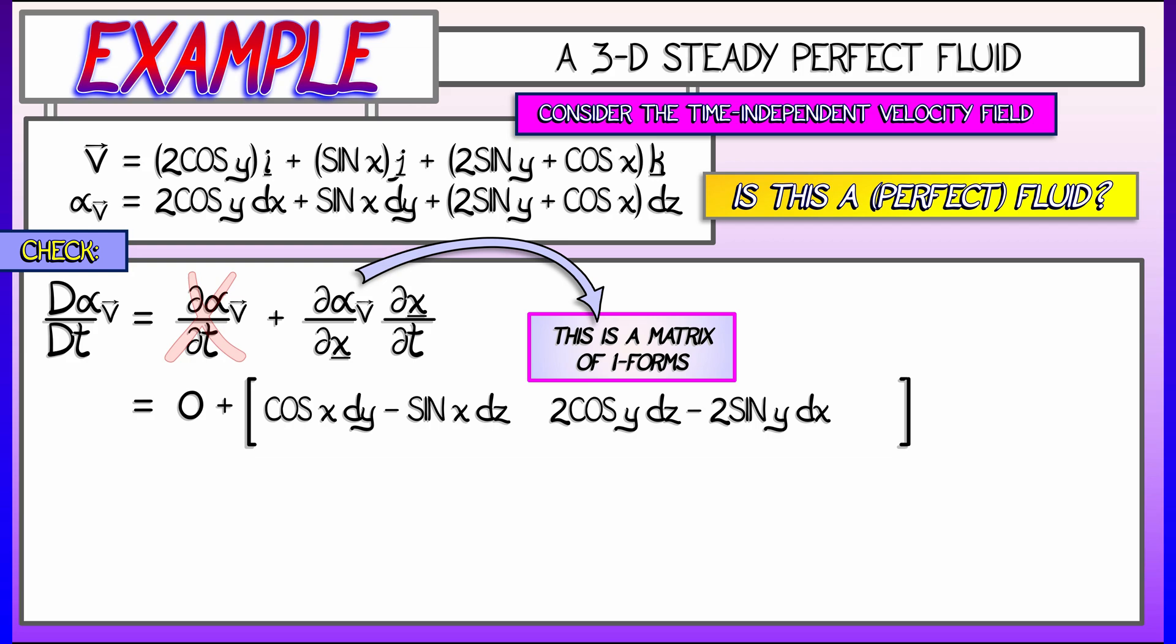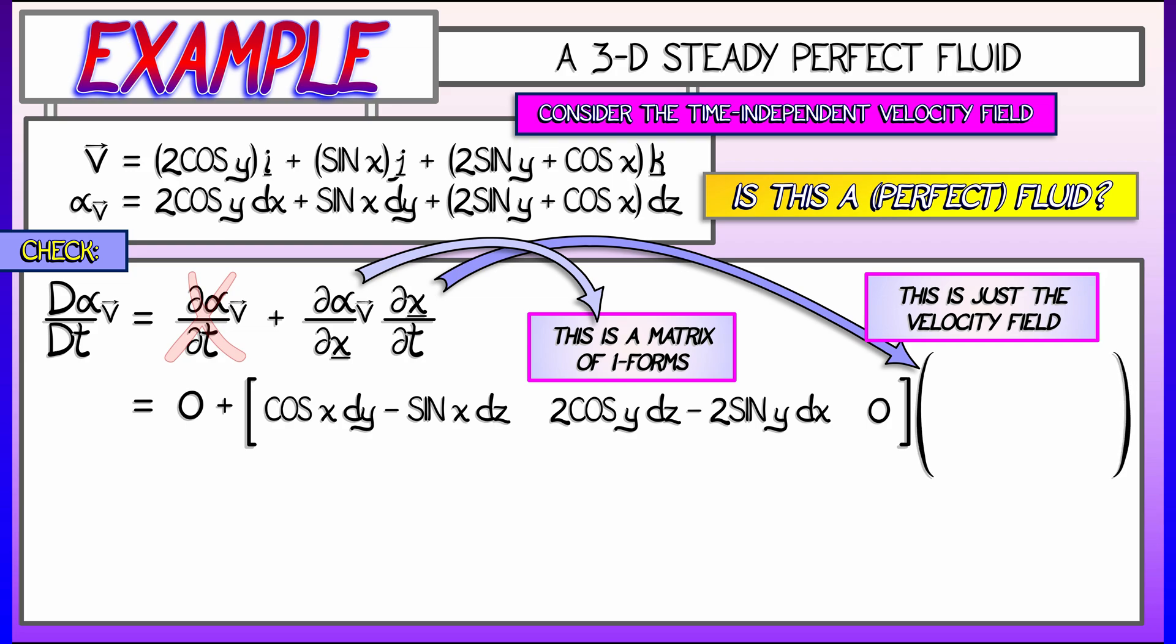Now, we're not done. We still have to take the partials with respect to z, but I don't see any z terms in there, so that partial is going to be zero. Okay, that's partial alpha v partial x. What about partial x partial t? Well, look, that's just telling you how particles are moving with respect to time. That is nothing more than the velocity field. So I'm going to write out those three components, two cosine y, sine x, and two sine y, plus cosine x.